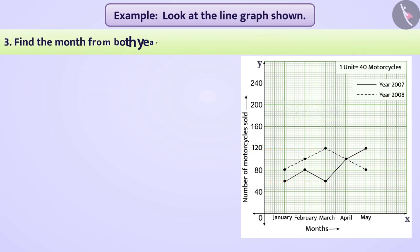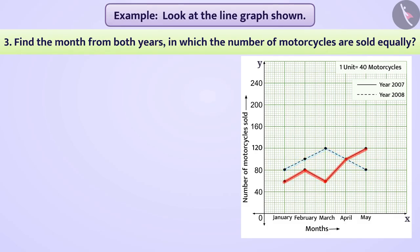Find the month from both years in which the number of motorcycles are sold equally. In the graph, the continuous line and the dotted line intersect at a point. The intersection point is located in April month.